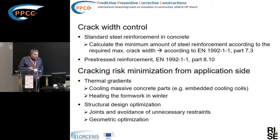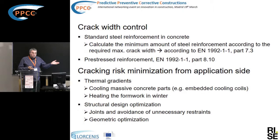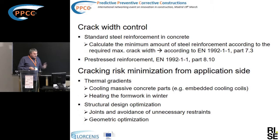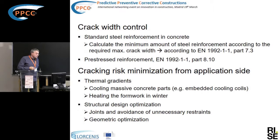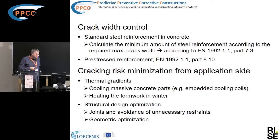Another measure is heating the formwork in winter, particularly in Scandinavia and northern countries, where there can be high gradients during winter — from perhaps 30–50 degrees in the inner hydrating concrete to as low as 5 degrees or below on the outer surface. The strategy in Nordic countries is often to heat the concrete during initial setting and the onset of hydration. Structural design optimization is also important: providing construction joints and avoiding unnecessary restraints and unfavorable geometry.